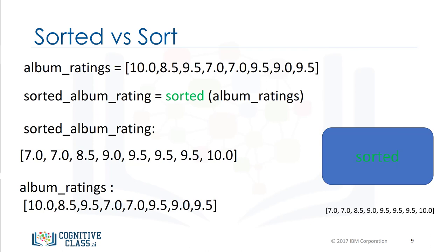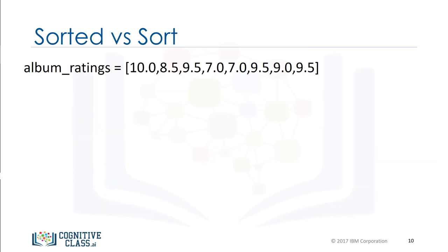If we look at the list album_ratings, nothing has changed. Generally, functions take an input — in this case a list — and produce a new output, in this instance a sorted list. If we use the method sort, the list album_ratings will change and no new list will be created.